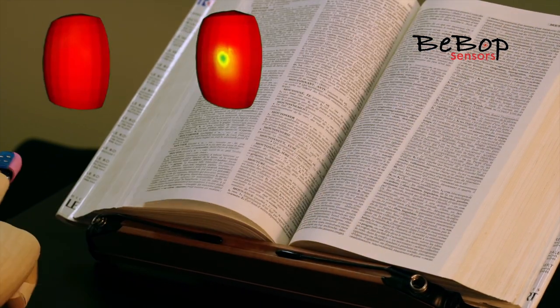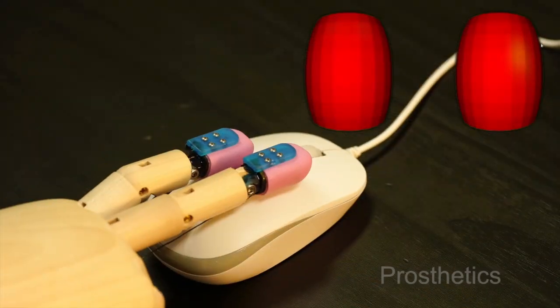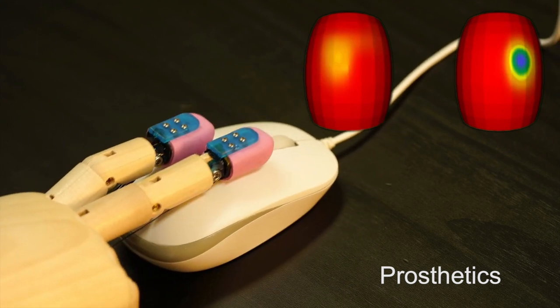Bionic limbs require the same refined nervous system as the biologic. Bebop's fabric sensors can return the sense of touch to modern prosthetics.